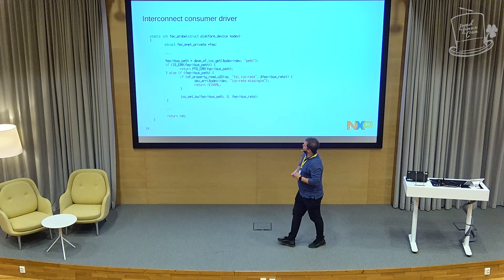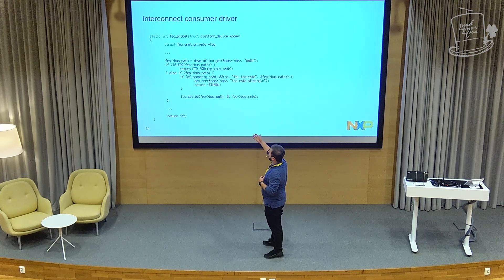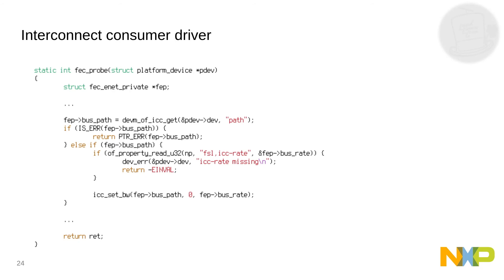This is the consumer driver — the Ethernet probe function. Among other things, it gets the ICC path — the interconnect path — and gets the rate. At the end, it sets the rate to whatever was specified in the device tree. This should be done before anything else, because you need to make sure you have the highest rate — otherwise some clocks might be disabled or gated, and the driver won't probe successfully if you're reading or writing.